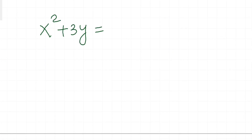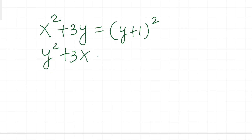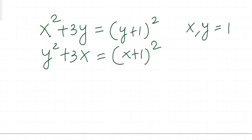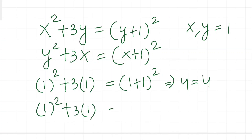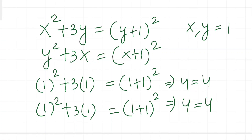Let's verify. The first equation becomes x² + 3y = (y + 1)² and the second y² + 3x = (x + 1)². Taking x = y = 1: 1 + 3 = 4 and (1 + 1)² = 4 — true. The second equation also gives 4 = 4. Taking x = y = -1: everything becomes 0, which also satisfies both equations. So x = y = ±1.